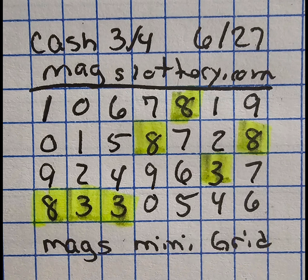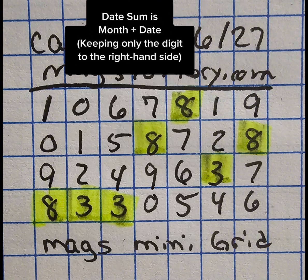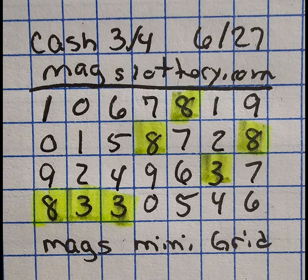You'll see that you have certain digits highlighted — that is going to be your date sum. Your next hit will have at least one of the digits either touch or include one or more of those areas.